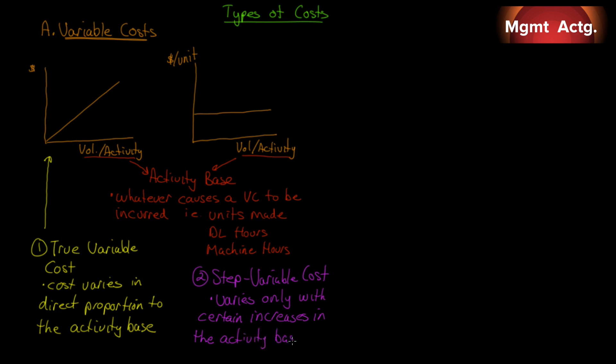If it didn't vary with the activity base, it would be fixed. So if we bought a software license that was unlimited, that's a fixed cost, because no matter how many people we add to the software license, our cost doesn't change. But if it changes for every chunk of people we add, it's called a step variable cost.